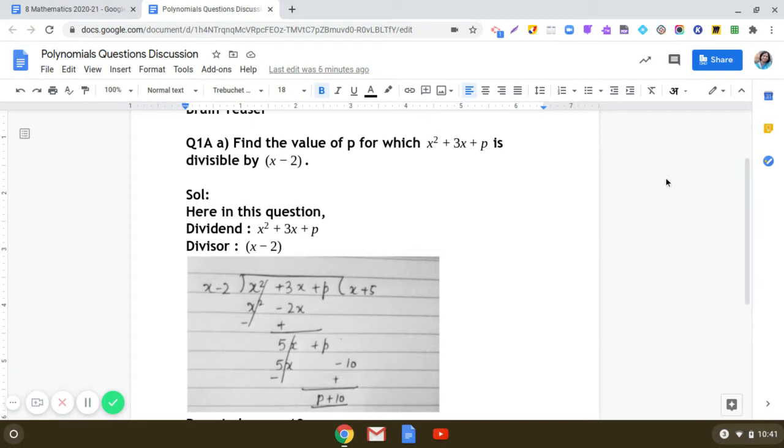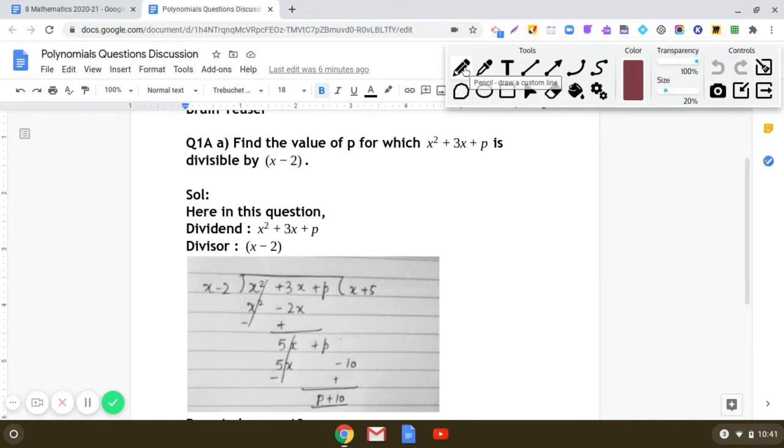Here in this question, observe that we are given dividend as x² + 3x + p and the divisor is x - 2.